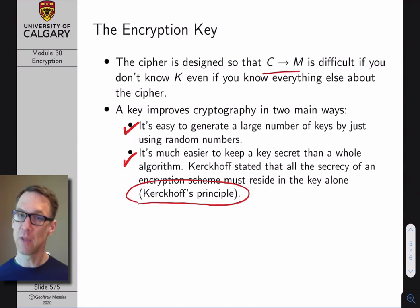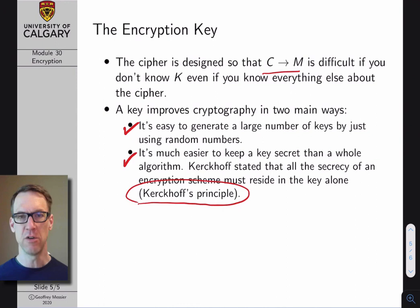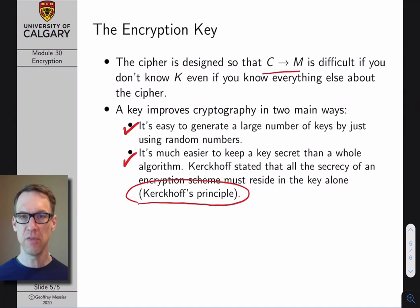The two main kinds of encryption used on the internet are stream ciphers and public key encryption. Together, these two forms of encryption work to secure the vast majority of encrypted web traffic traveling back and forth on the internet today.